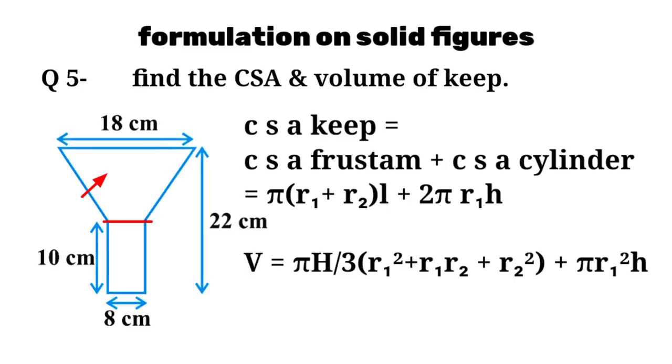Here the figure is a keep, combination of a frustum of a cone and a cylinder. Therefore, CSA equals: